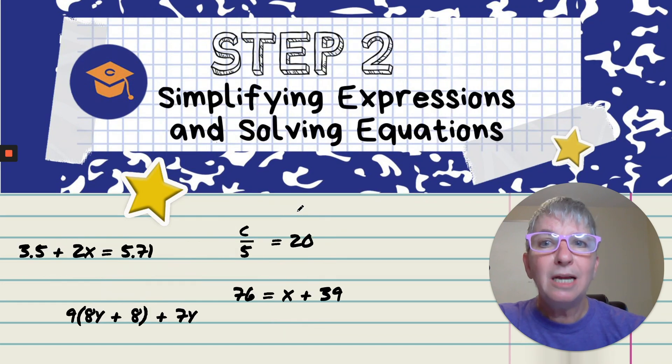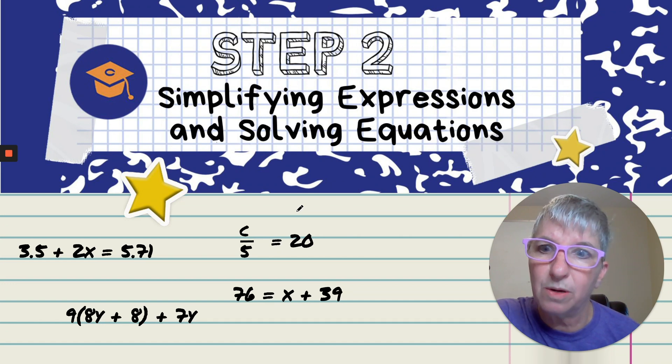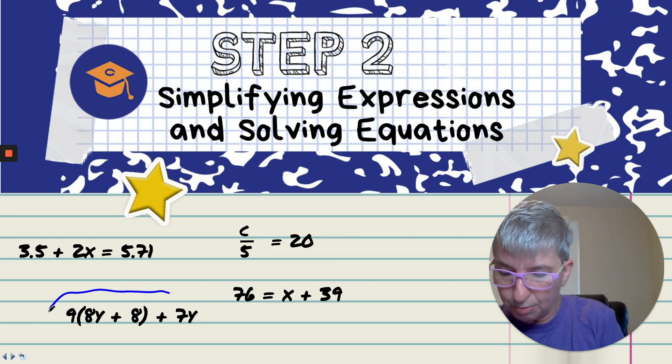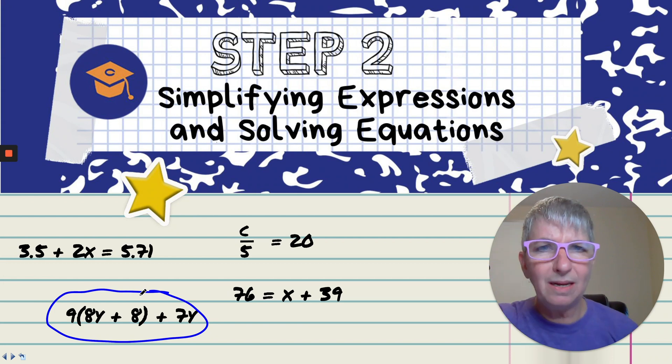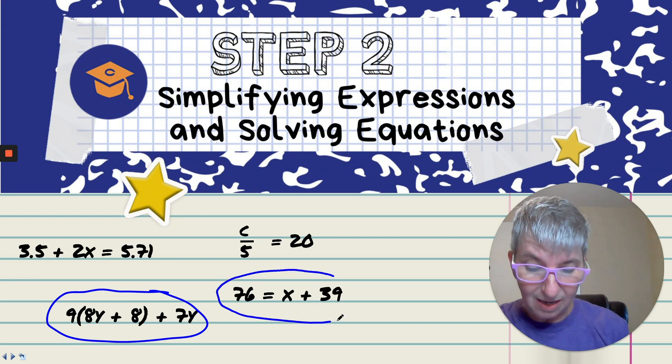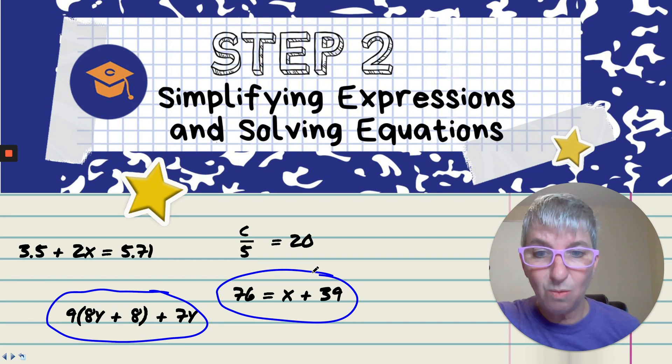Well, what's step two? Step two is all about simplifying expressions and solving equations, which is the foundation of Algebra. So you're going to be taking an expression like this and distributing and combining like terms. You're going to be taking an equation like this and solving for x, finding what that magical value for x is. So you're going to find out that the variable in Algebra always wants to be by itself.